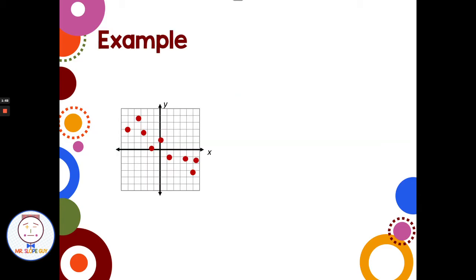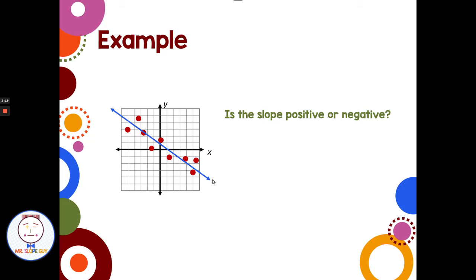For example, looking at this scatter plot — what kind of correlation do we see? From left to right, the points are flowing down, so it looks like a negative correlation. They're pretty close to the line, so I would say it's a strong negative correlation. This line has about half the points above and about half below. It doesn't matter if it goes through the actual points; it just has to go through the middle with about half above and half below.